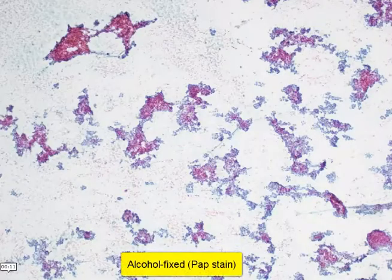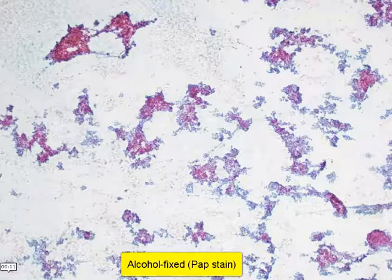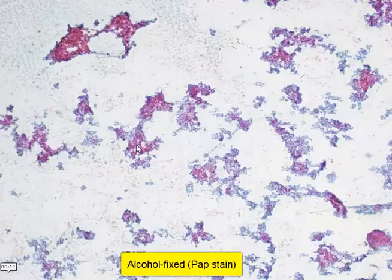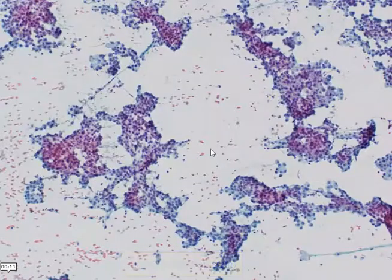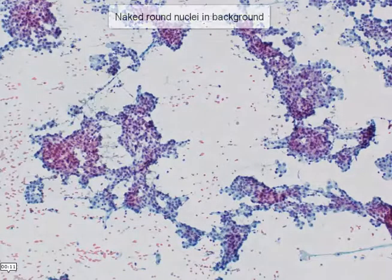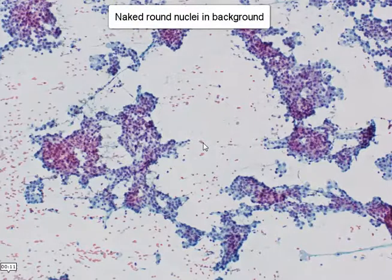Moving on to the alcohol-fixed smears, we can see a similar pattern on low power — these branching tissue fragments. Note also that there are some bare, naked, round nuclei in the background.